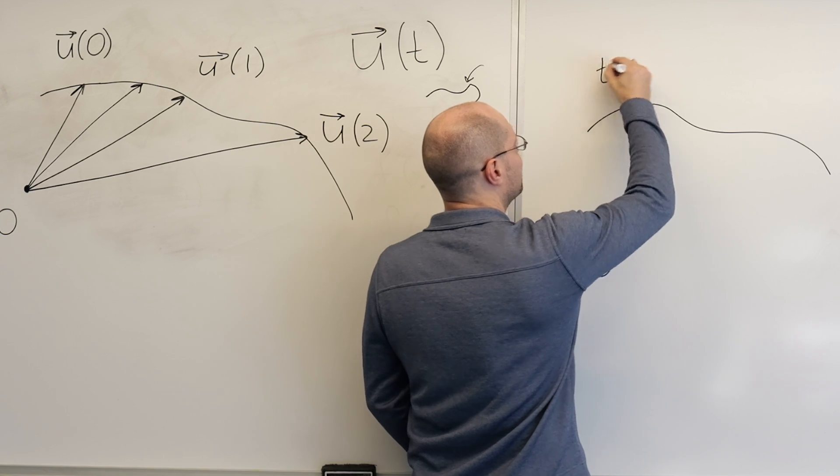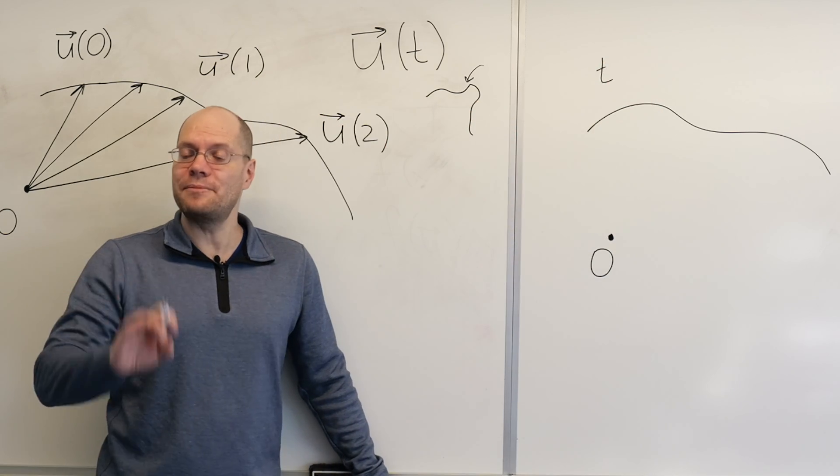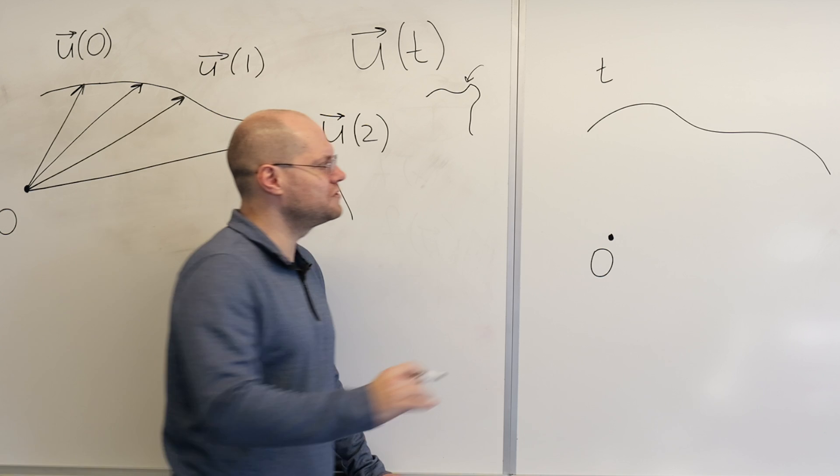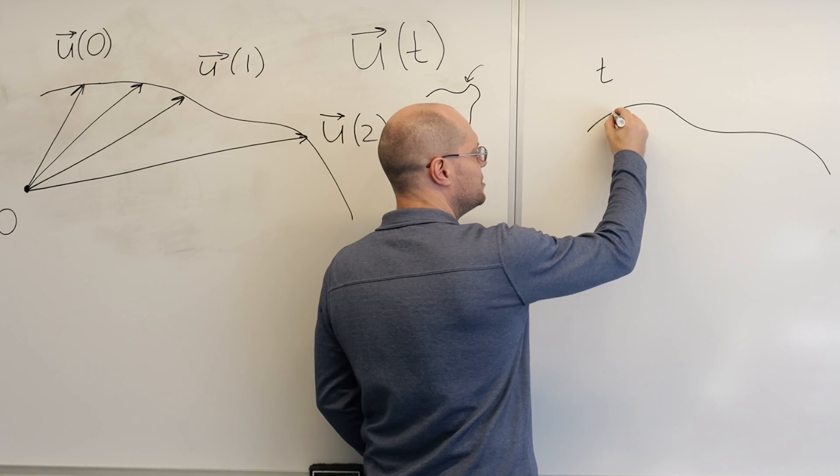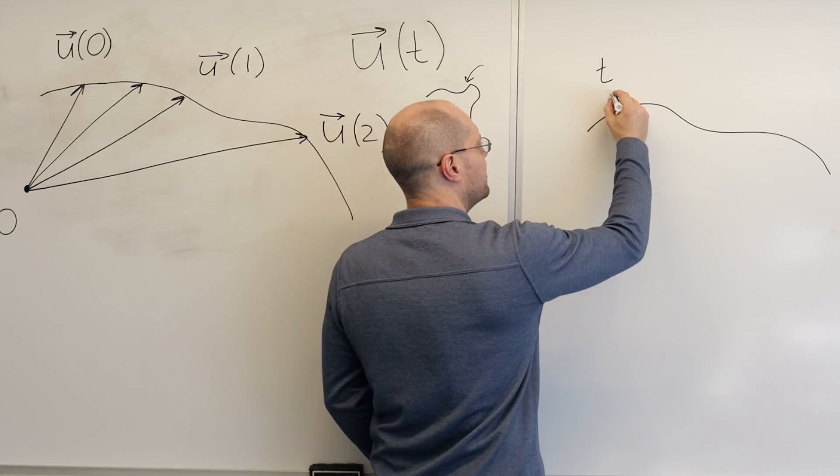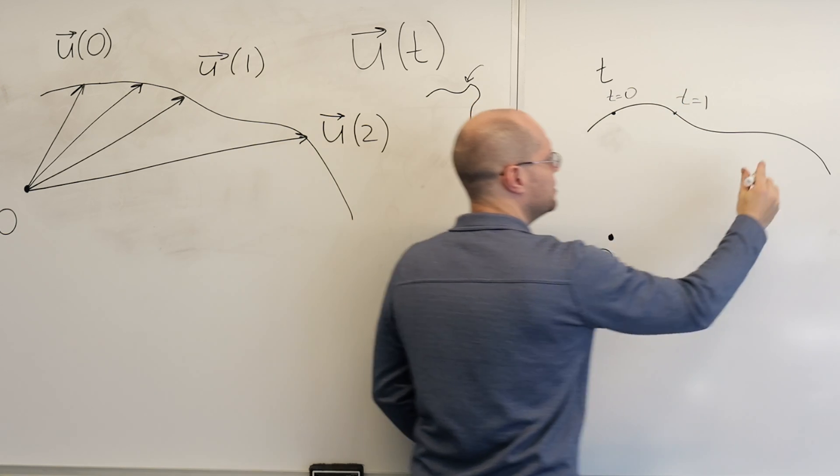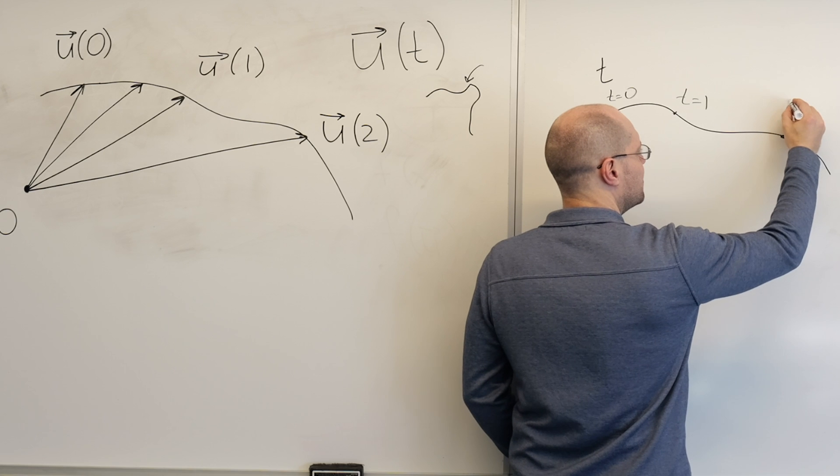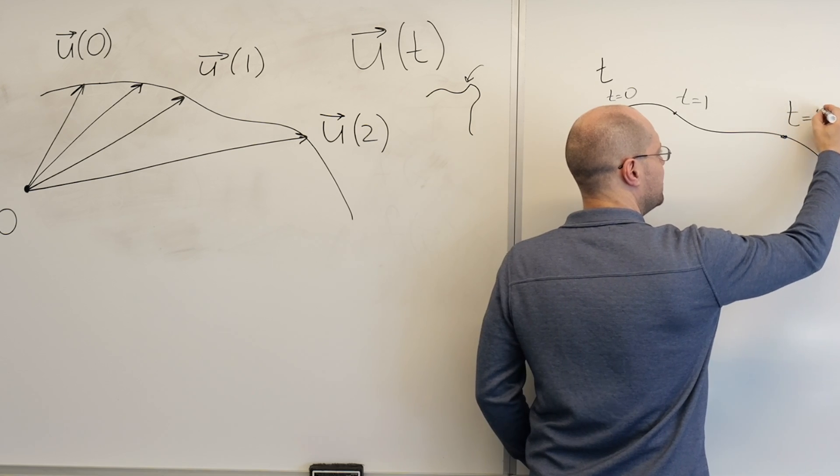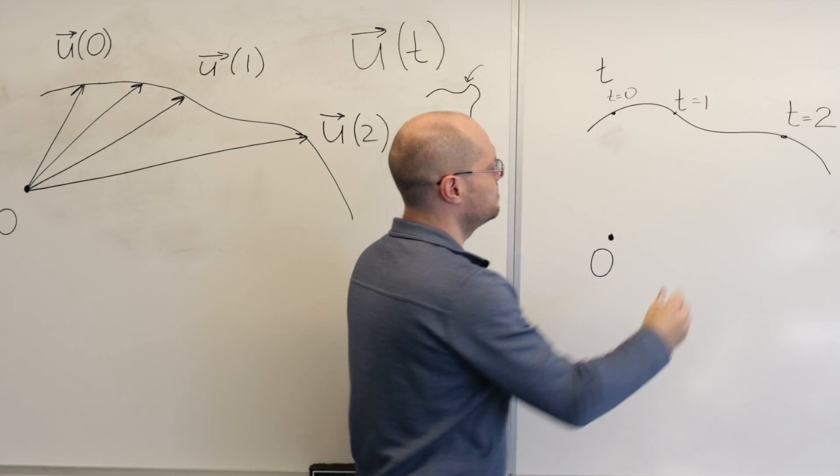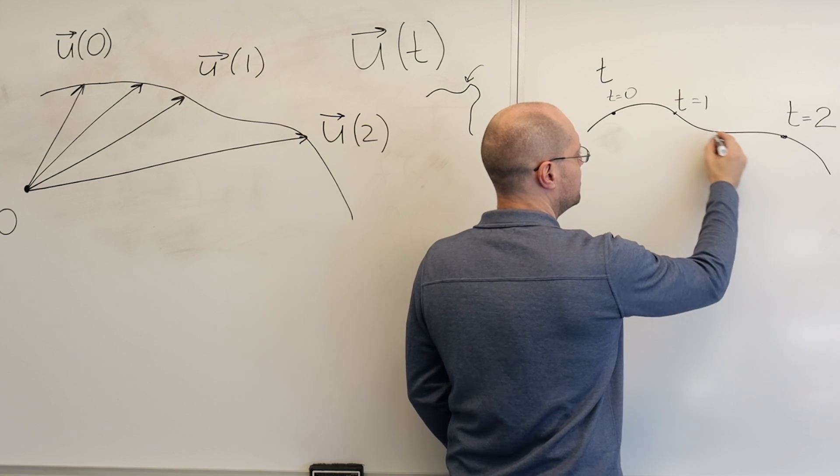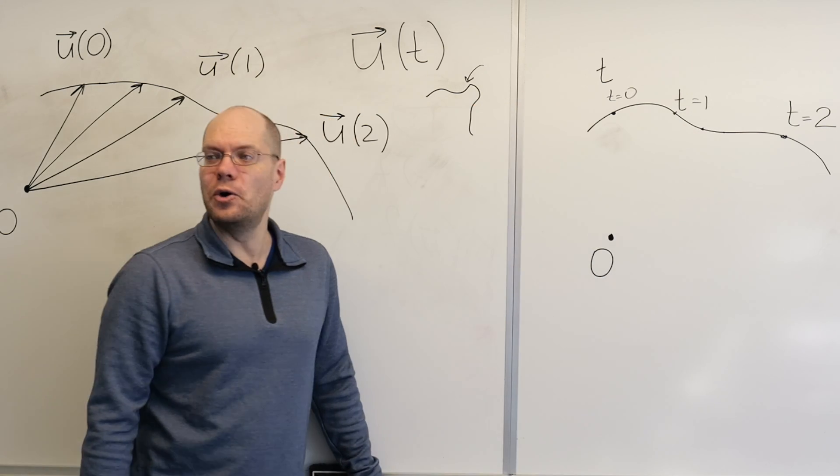We have to pick a parameter. We have to parametrize the curve. We'll have to say that this point corresponds to t equals 0. This point corresponds to t equals 1. I don't want it to be equal space, so this point corresponds to t equals 2. This point corresponds to t equals maybe this one, 1.5, and so on.